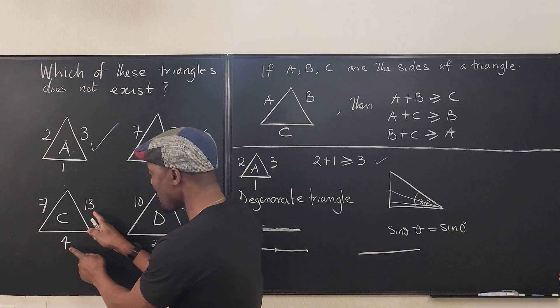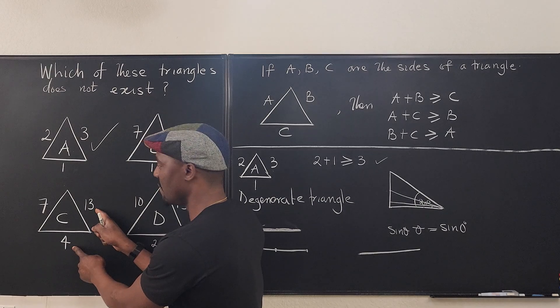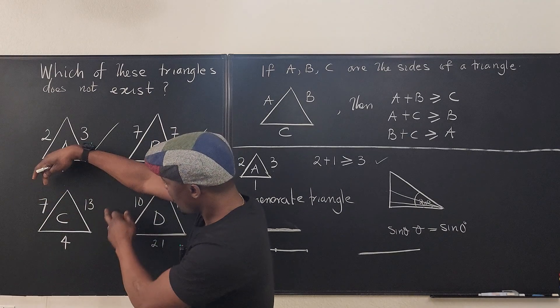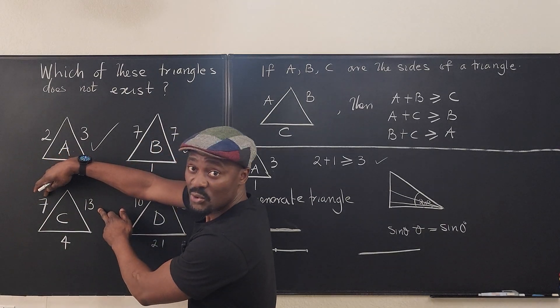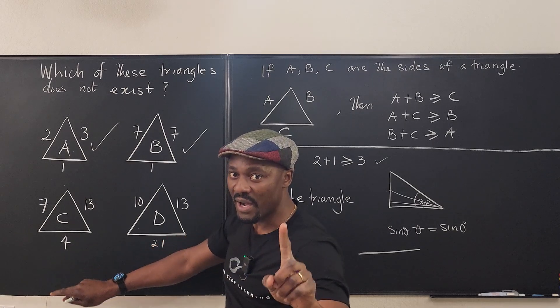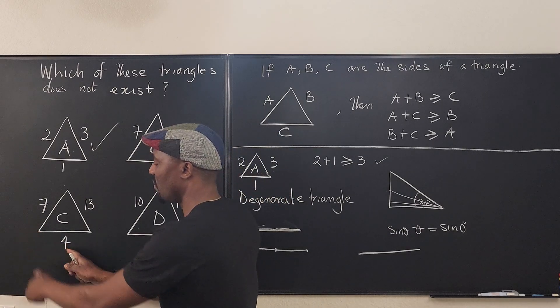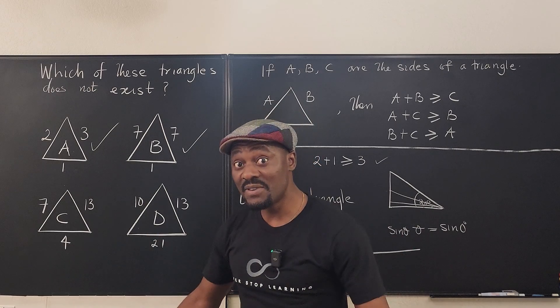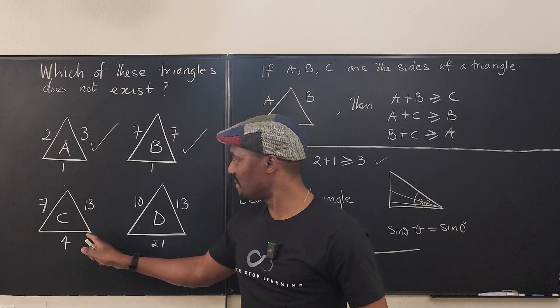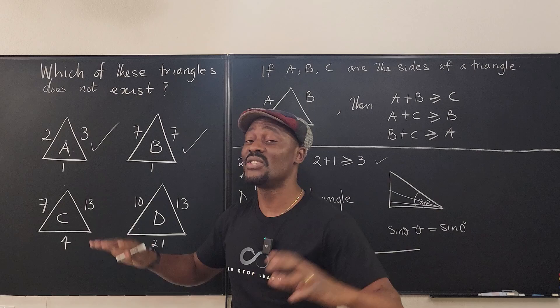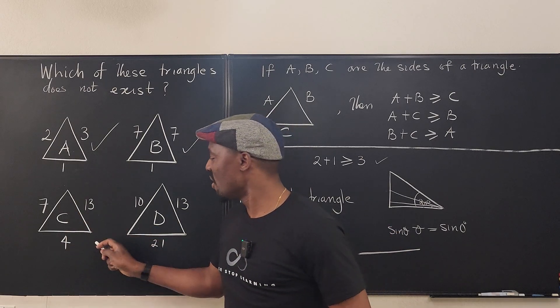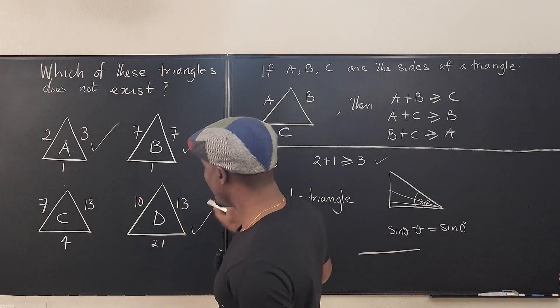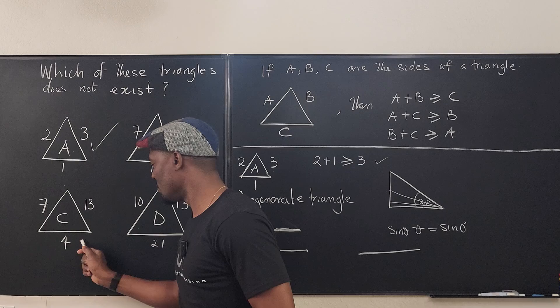When you get here, if you add 13 and 4, you get 17. It is greater than 7. 7 plus 13 is 20. It is greater than 4. But 7 plus 4 is not greater than 13. It's not even up to 13. And because of that, this triangle cannot exist, does not exist, is not real. So check, check, check. No check.